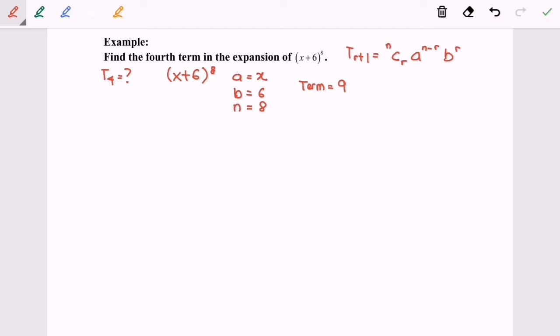So here we're going to find the fourth term, T_4. So from here we know that our r will be equal to 3, because r+1 is equal to 4, so r will be equal to 3.